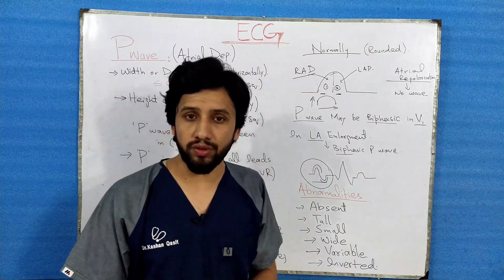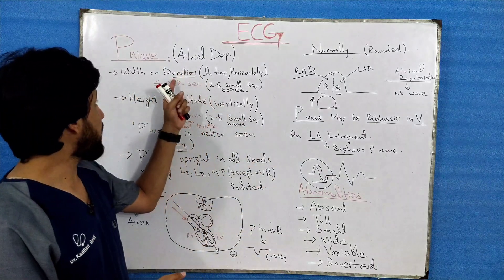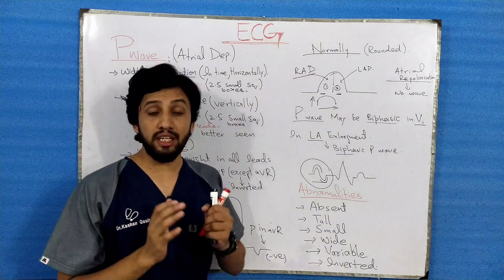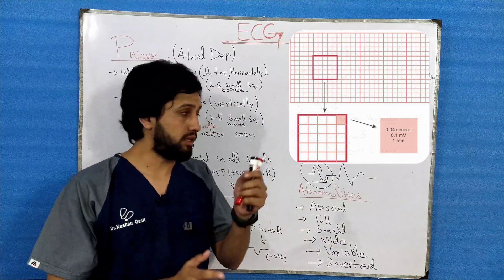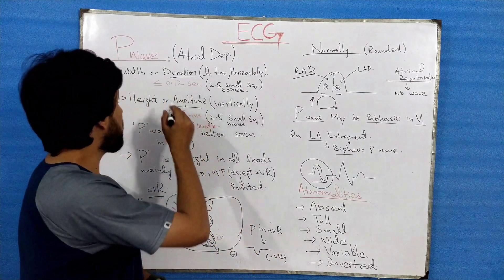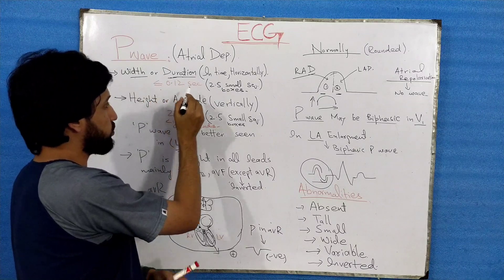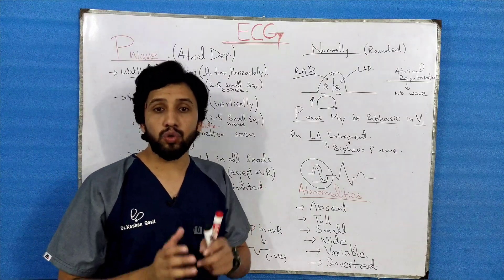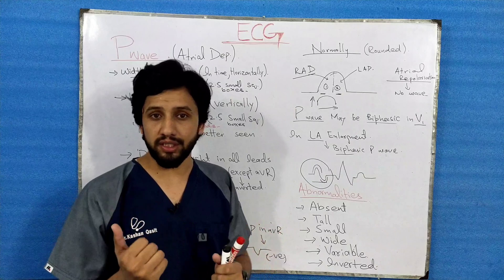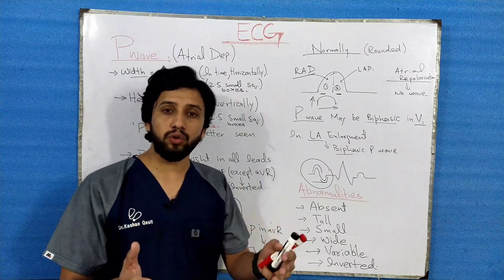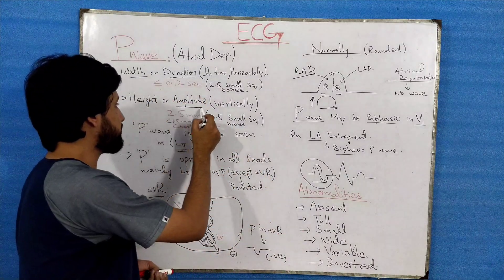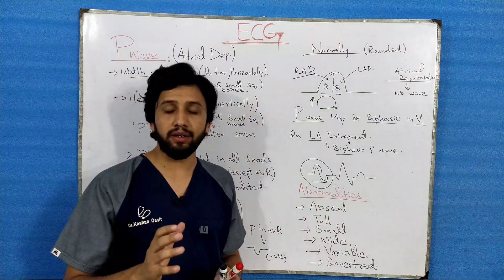The P wave is due to atrial depolarization. There are two key measurements: duration and amplitude. Duration is seen on the ECG paper in a horizontal pattern. Normally, the width or duration of the P wave is 0.12 seconds, which is equivalent to 2.5 small square boxes. I've discussed small and large boxes in detail in my previous lecture, so go and watch that video.